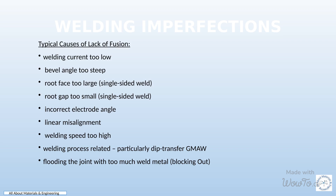Lack of fusion in welding occurs when the weld metal fails to properly bond with the base metal or the previous weld pass, resulting in weak or incomplete welds. Common causes include using a welding current that is too low, having a steep bevel angle, having a large root face or small root gap in single-sided welds, using an incorrect electrode angle, having linear misalignment, using a welding speed that is too high, using the deep transfer GMAW process, or flooding the joint with excessive weld metal. These factors can prevent proper fusion and bonding, leading to poor weld quality.